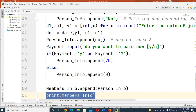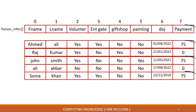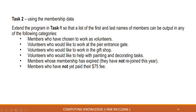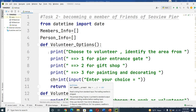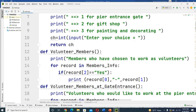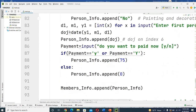Now I am moving to Task 2. Task 2 says: using the membership data, extend the program from Task 1 so that a list of first and last names of members can be output in any of the following categories - members who have chosen to work as volunteers, volunteers who would like to work at the entrance gate, volunteers who would like to work in the gift shop. I will show you all these options one by one.